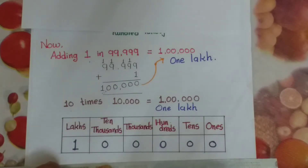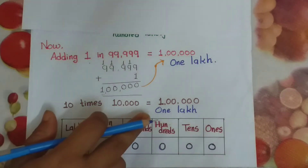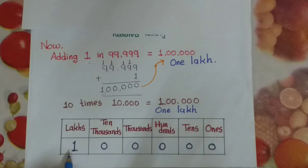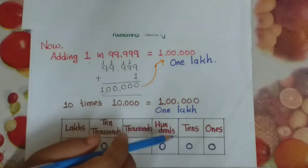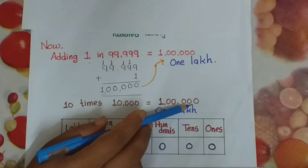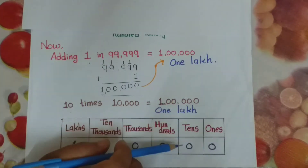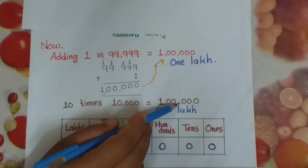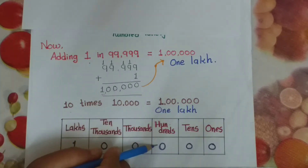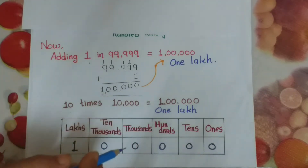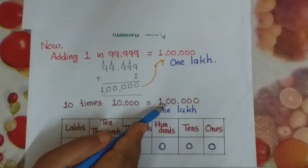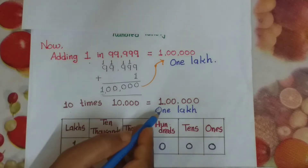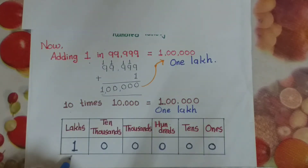Now we have to see about 1 lakh. On the lakh place, 1 is there. On the 10,000s place, 0 is there. On the 10s place, 0. On the 100s place, 0. On the 1,000s place, 0. On the 10,000s place, 0. On the lakh place, 1 is there. So we get the number 1 lakh.